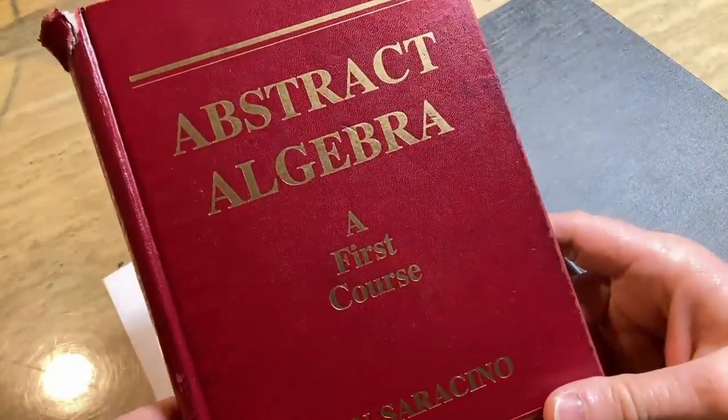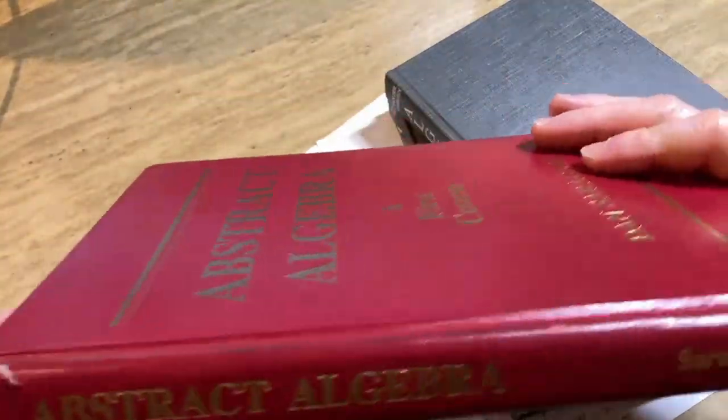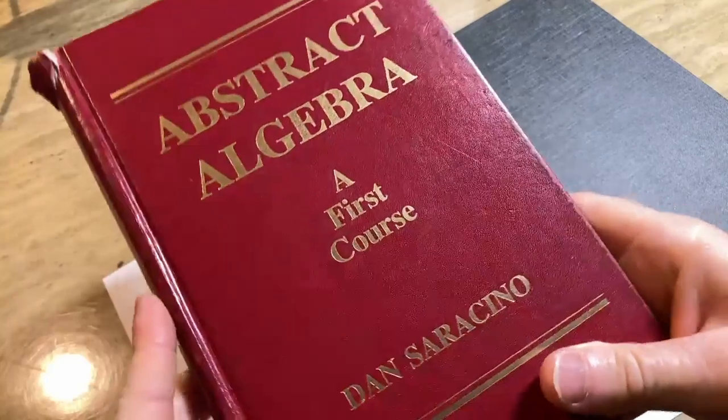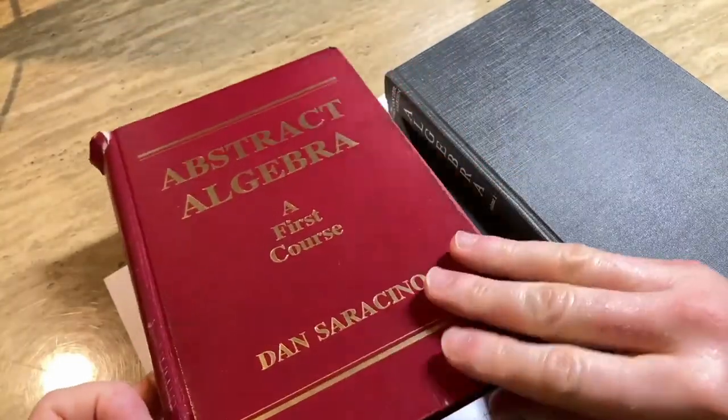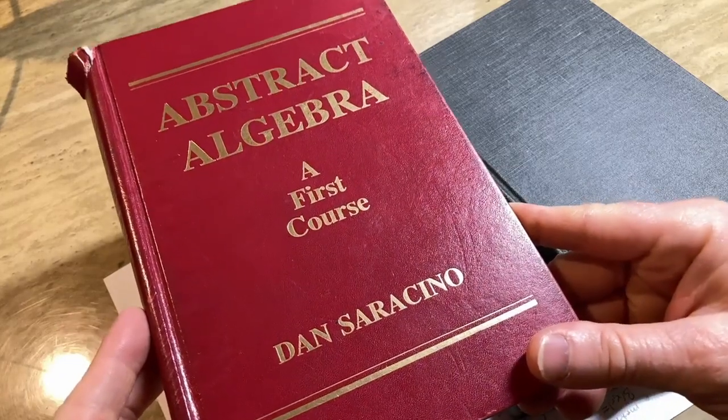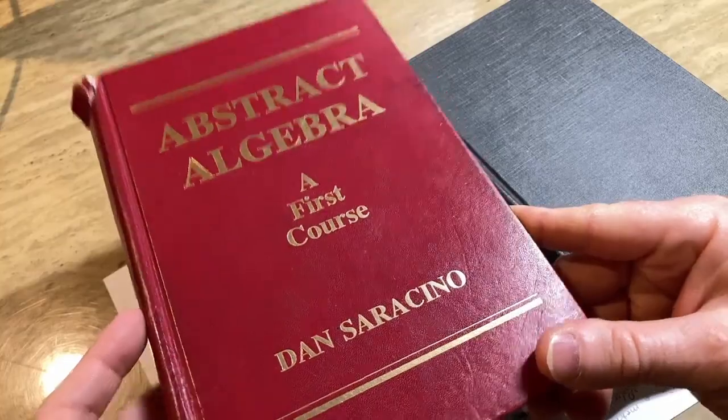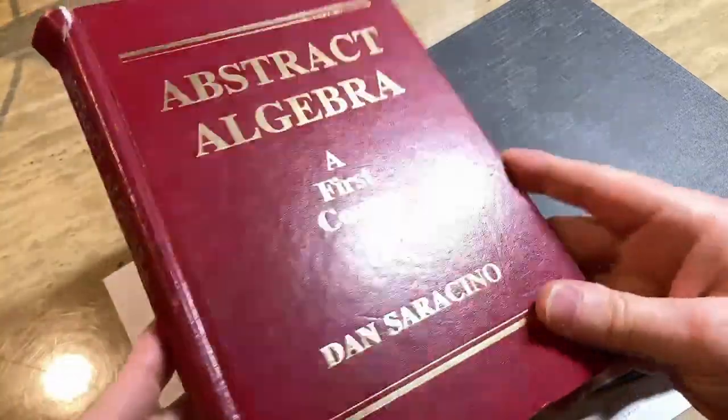It's called Abstract Algebra First Course by Dan Saracino. I've actually read this entire book and I've done almost every single exercise. The biggest downside to this book is that it does not have enough content, so if you want to become really good at abstract algebra, you need to know considerably more than what is found in this wonderful little book.